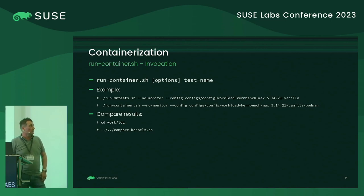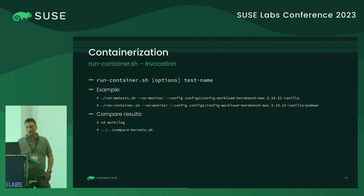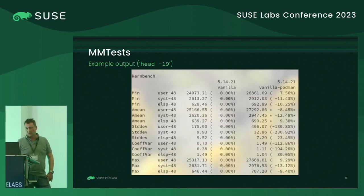Invocation of the script is quite similar to runmmtests — the only required argument is again the test name. An example compares a KernBench run with a vanilla kernel versus a run with a container started with podman. The actual call looks quite similar, and comparison of results is done similarly to before. Example output between 5.14.21 vanilla and the same test in a container shows that execution time was slower in the container — a performance decrease of about 9%.